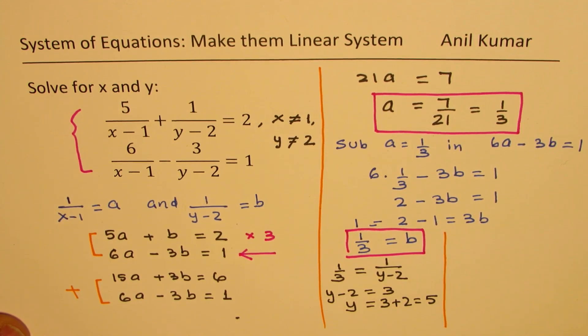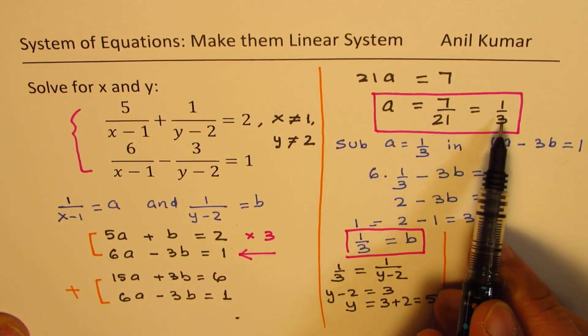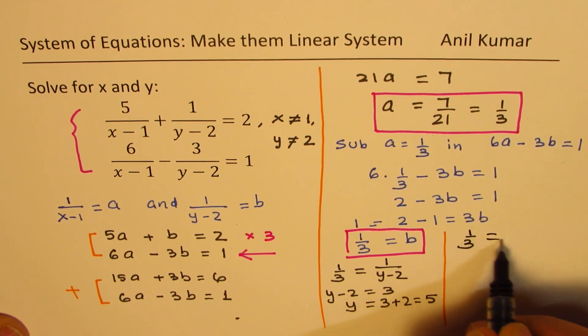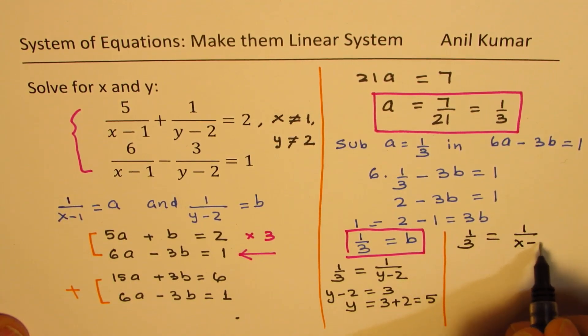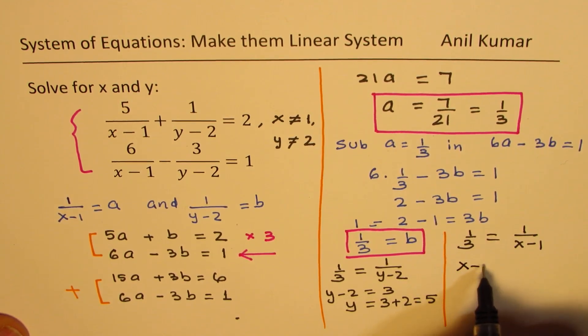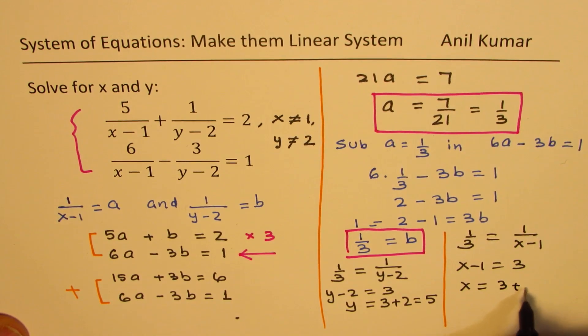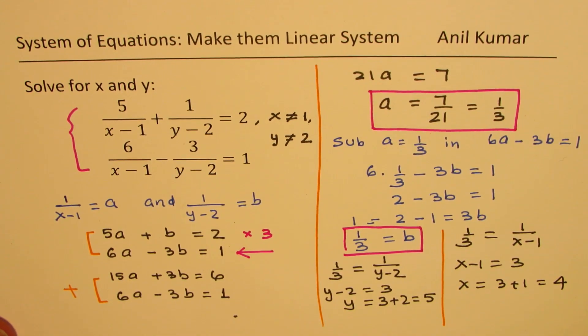On the other hand, we'll substitute the value of a, which is 1 over 3, as equal to 1 over x minus 1. Cross multiply, we get x minus 1 equals 3. Or x is equal to 3 plus 1, which is 4. So we get both x and y values.